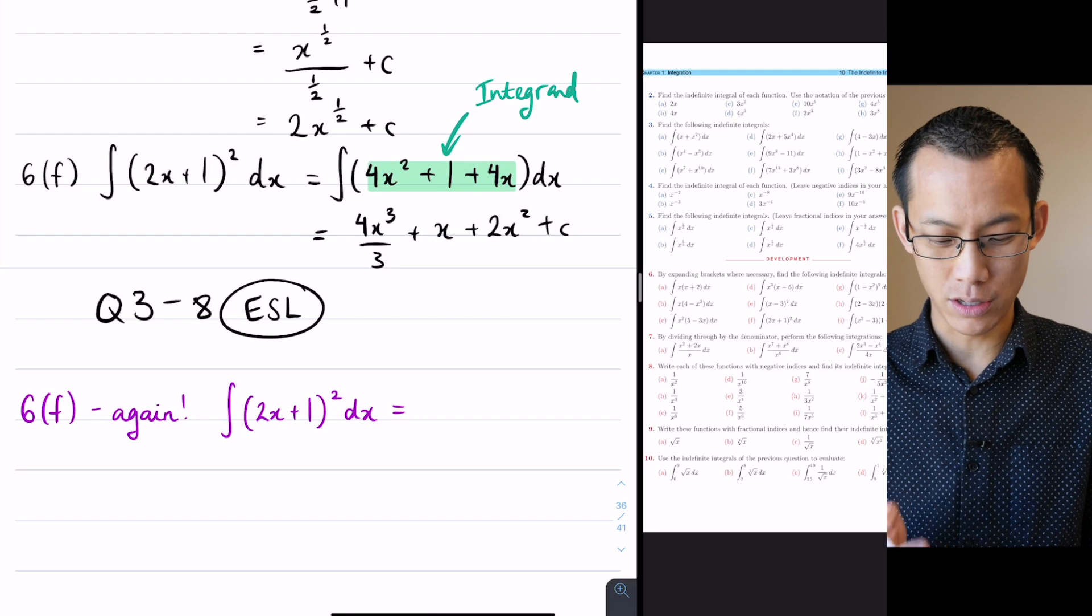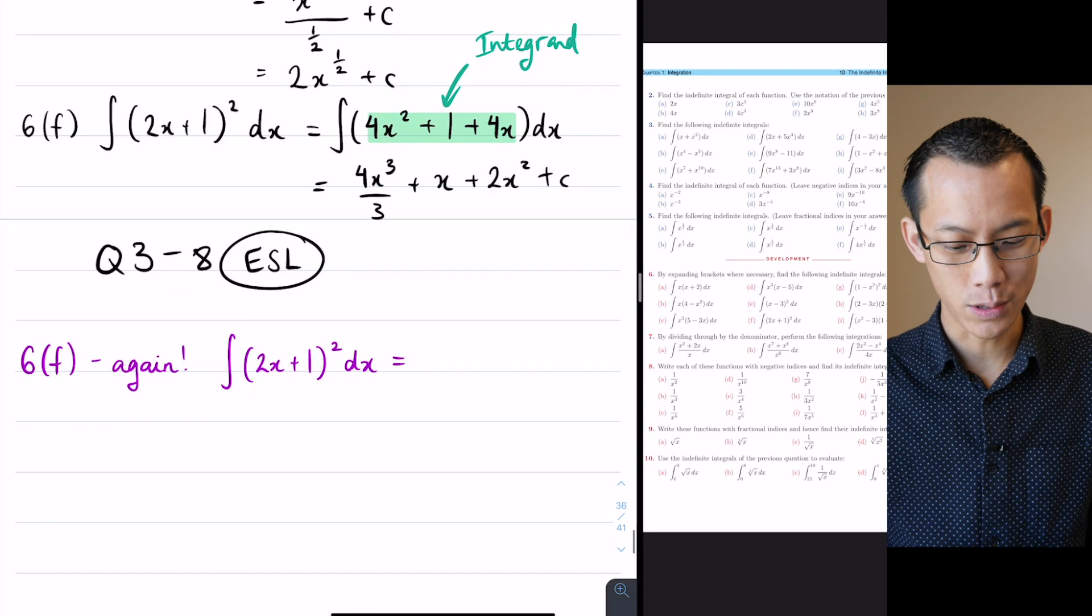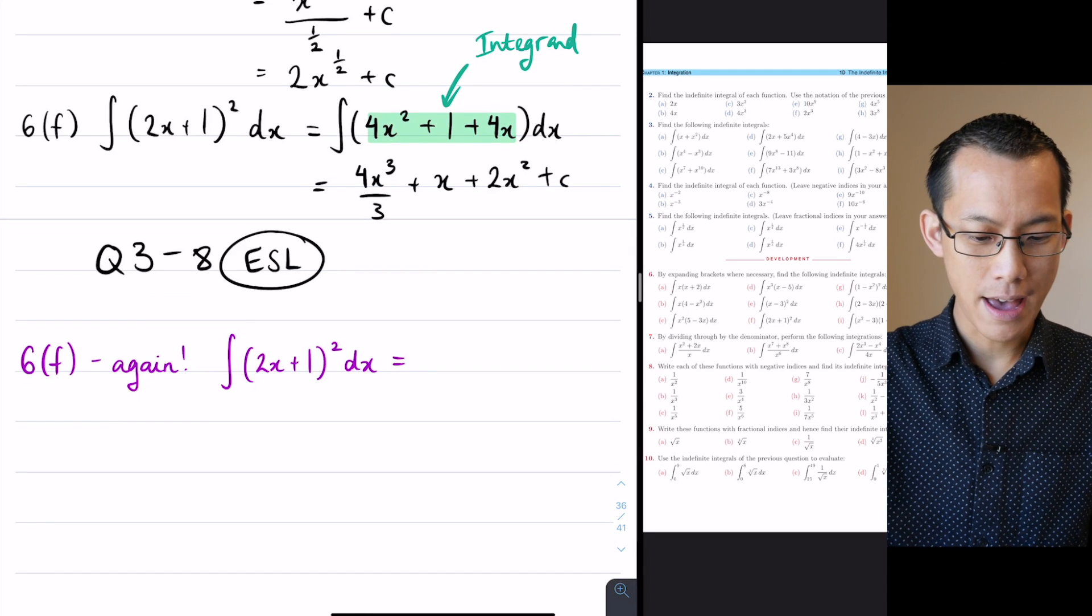It's not chain rule because we're not differentiating, but we're undoing that process, so that's why we call it reverse chain rule. Let me show you how it works.